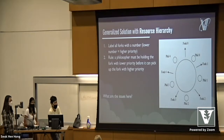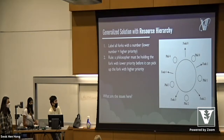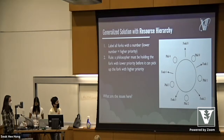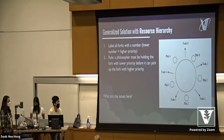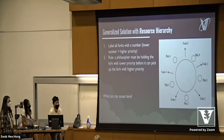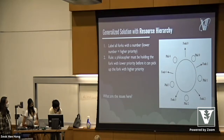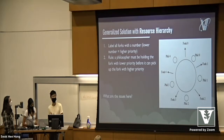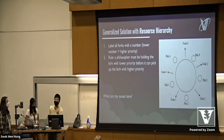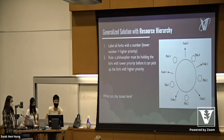Starvation in CS is when certain processes are continuously getting all the resources. One philosopher can keep both forks for an indefinite amount of time while the other philosophers never get to eat, because we never described a system for: if this philosopher has eaten for a certain period of time, then he should give up that fork to someone else. Can anyone think of a way where each philosopher is kind of forced to give up their forks after they've eaten?